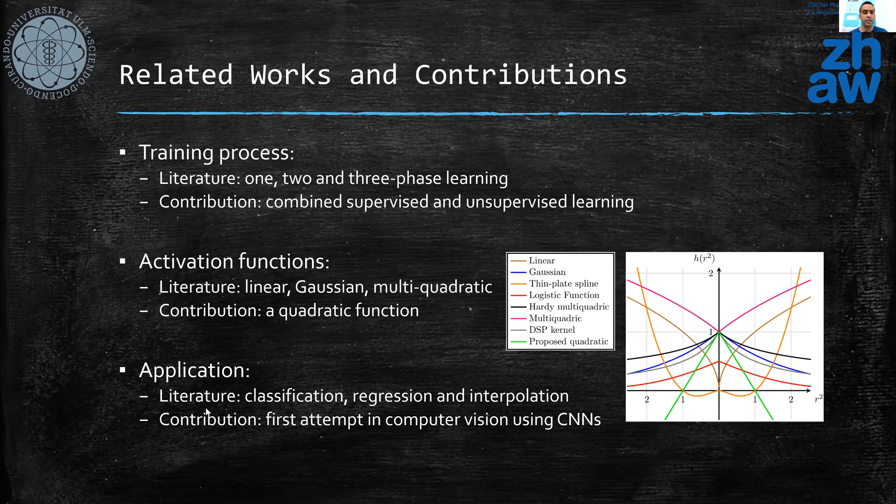In terms of applications, CNNs are used for classification, regression, and even mathematical function interpolation. Here we present the first attempt of using RBFs in conjunction with CNNs for computer vision.